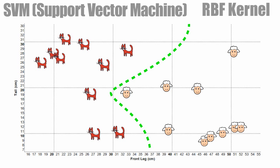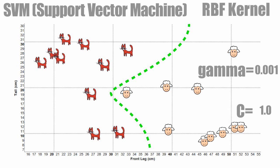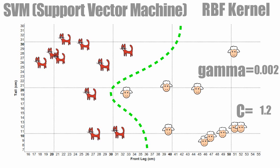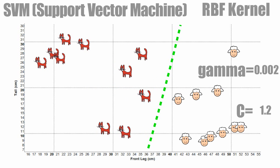Two parameters control this curve: Gamma and C. We can adjust them to get better results. Finally the kernel machine transforms it back to a linear problem.